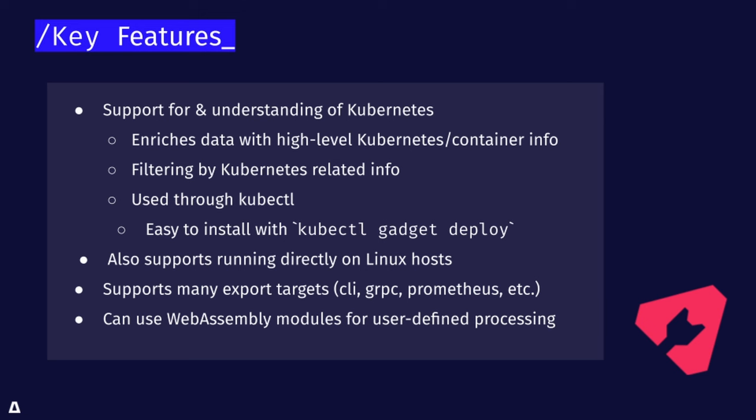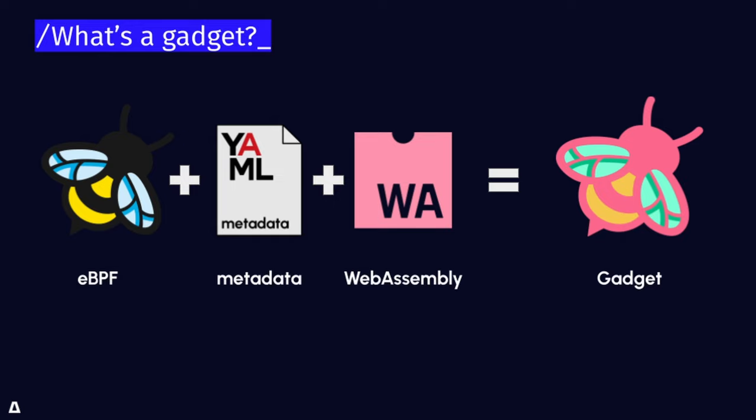We also have a mechanism to do some user-space processing and package that inside of a gadget so that you can deliver it along with the gadget itself and the BPF program. This is done in WebAssembly modules, and you can do this in any language that WebAssembly supports — Go, Rust, JavaScript, etc.